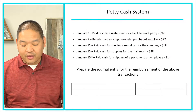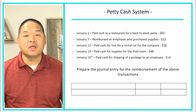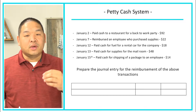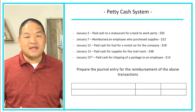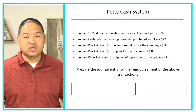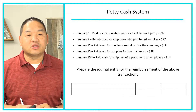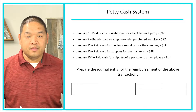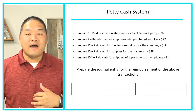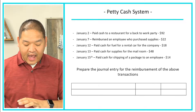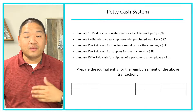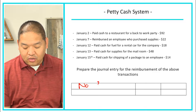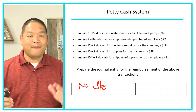Moving to Part B — prepare the journal entries for reimbursements of the above transactions. When each transaction occurs and the receipt is given to the petty cash custodian, there is no journal entry completed at that time. The journal entry is completed when we ask to have the petty cash replenished. So in this case, there is no journal entry — which makes sense.